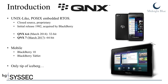So what is QNX? QNX is a Unix-like, POSIX-compliant embedded real-time operating system. It's closed source and proprietary. It was initially released in 1982, so it's quite old, and was later acquired by BlackBerry. QNX versions up to and including 6.6 are 32-bit operating systems, but as of QNX 7, which was released in March of this year, it's a 64-bit operating system.